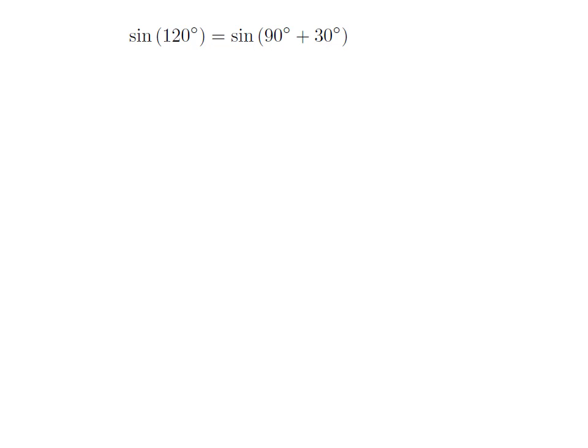As 120 degree is equal to 90 degree plus 30 degree, so sine of 120 degree is equal to sine of 90 degree plus 30 degree.